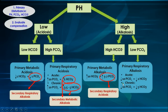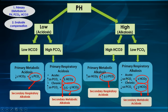For primary respiratory alkalosis, we again have acute and chronic compensations occurring primarily through the kidneys, called secondary metabolic acidosis. If the decrease in bicarbonate is more than expected for the decrease in pCO2, you have a mixed primary respiratory alkalosis and primary metabolic acidosis. If the decrease in bicarbonate is too small for the decrease in pCO2, you have a mixed primary respiratory alkalosis and primary metabolic alkalosis, where the kidneys are unable to decrease bicarbonate sufficiently.